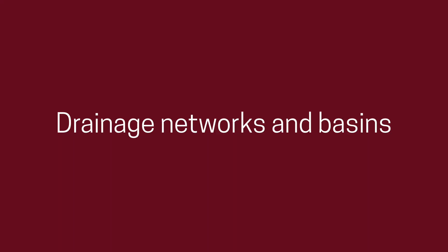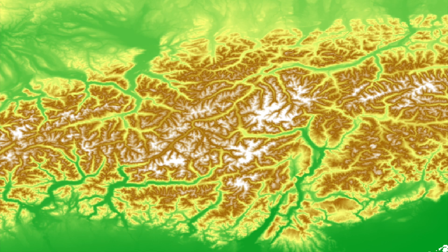Finally, let's look at two concepts that can be derived from the flow direction and the flow accumulation in a DTM: drainage networks and basins. Starting with the DTM, in this case one of the Alps, we first compute the flow direction. The colors here correspond to one of the eight directions.